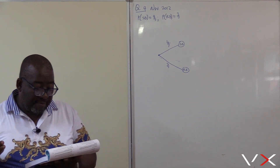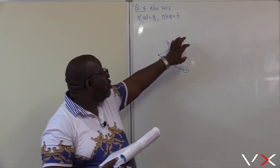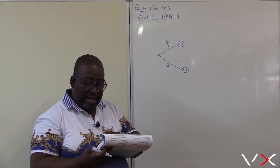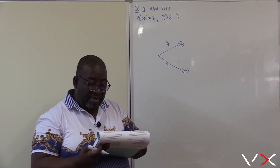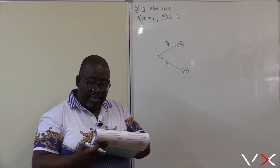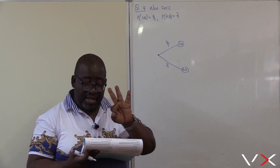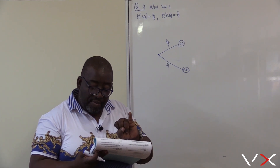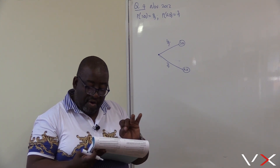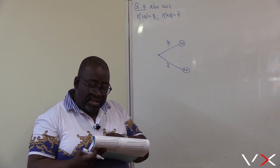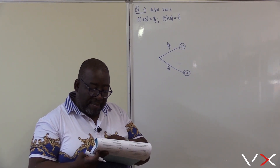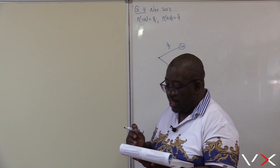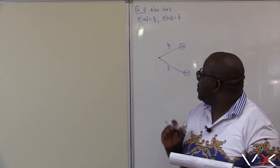Let's look at the bullets they've given us. If it is a sunny day, I will go to that branch. The probability that Vosi cycles to work is 7 over 10, the probability that Vosi drives to work is 1 over 5, and the probability that Vosi takes a train to work is 1 over 10. So there are 3 things here: Vosi cycles, drives, or takes a train to work.